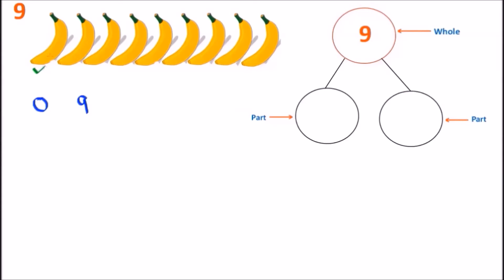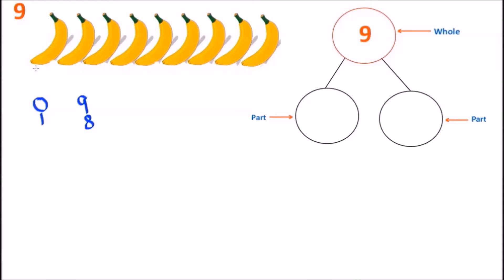Let's start counting. We have one banana — that's going to be one part of our number bond. Now let's see how many bananas are left: one, two, three, four, five, six, seven, and eight. So we have eight bananas left as our second part. A one on the left side and an eight on the right side — one and eight together give us the number nine.